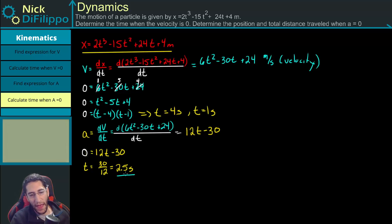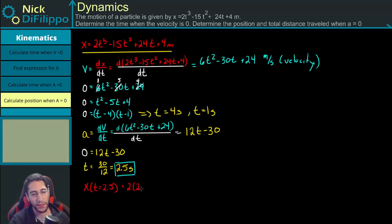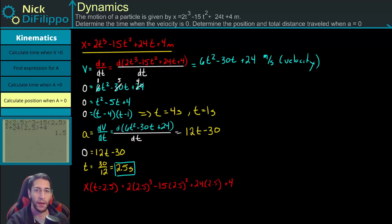At t = 2.5 seconds, acceleration is zero. We can now plug this back into the position equation: x(2.5) = 2(2.5)³ - 15(2.5)² + 24(2.5) + 4. Calculating this gives a position of 1.5 meters.